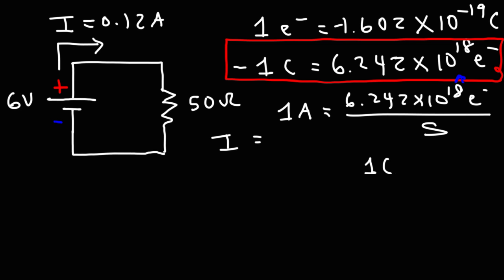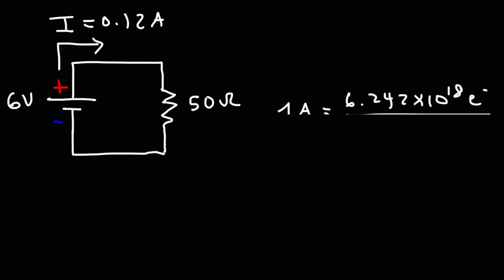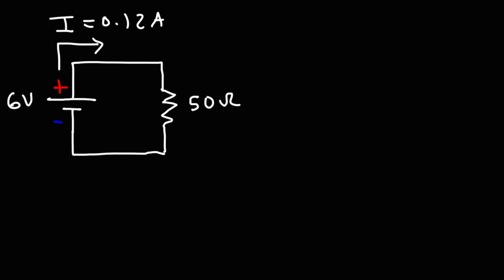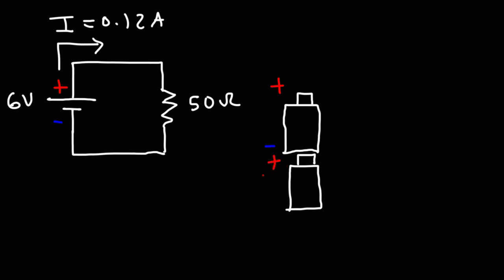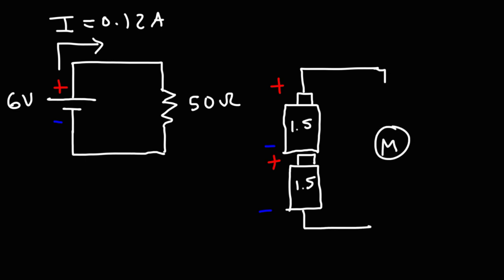How can we increase or decrease the current and voltage in a circuit? If we want to increase the voltage provided by batteries, we can connect them in series. Here are two D-sized batteries connected in series — the negative terminal of one attached to the positive terminal of another. Each battery has 1.5 volts, so connected in series, a multimeter will read 3 volts total.